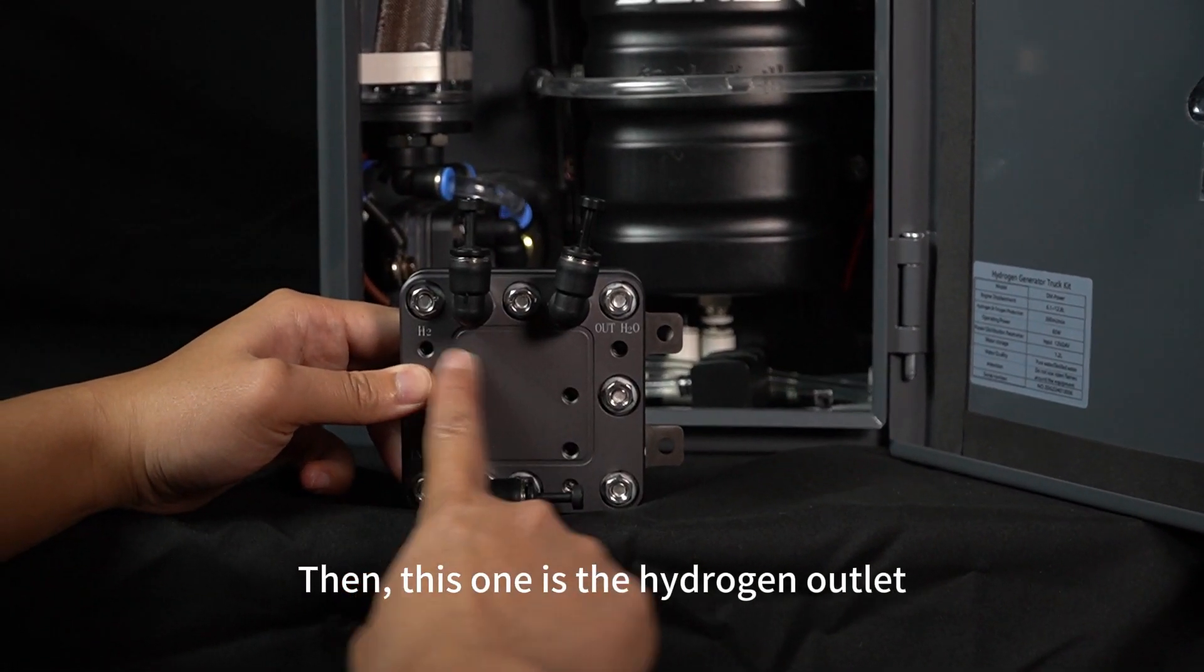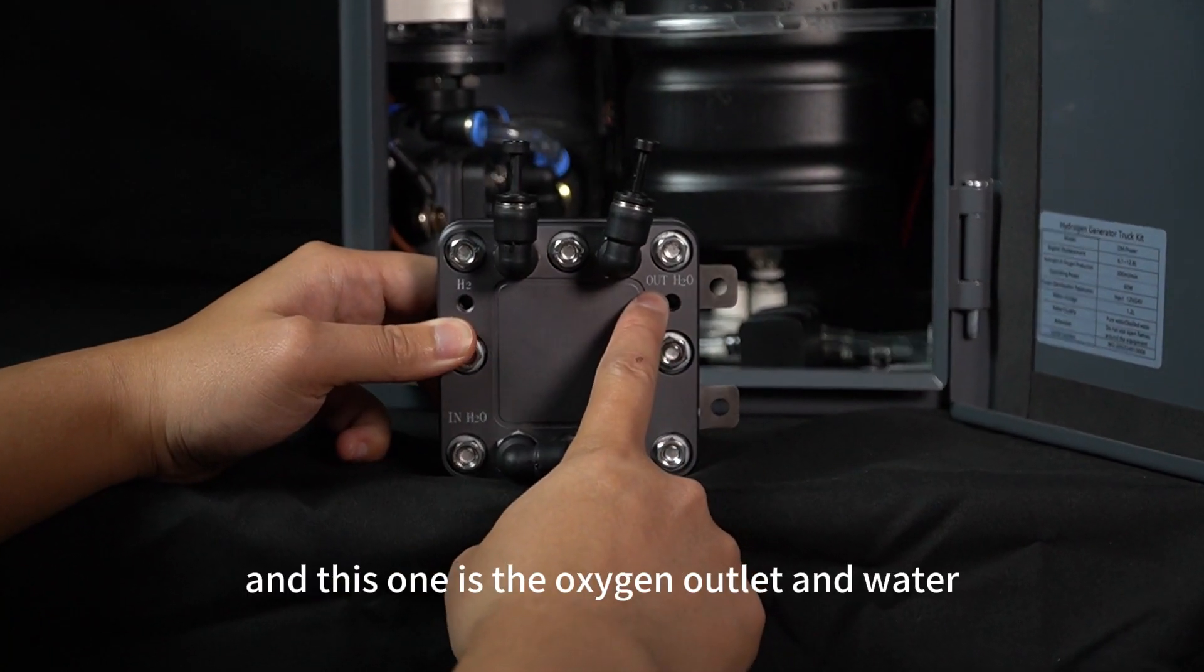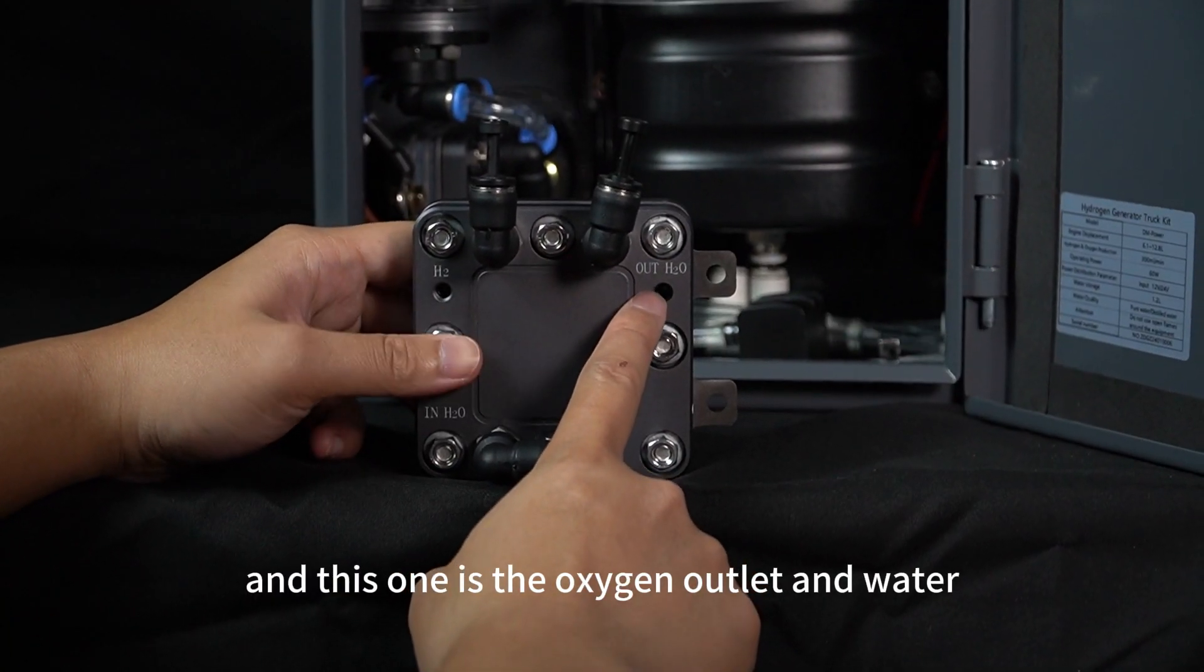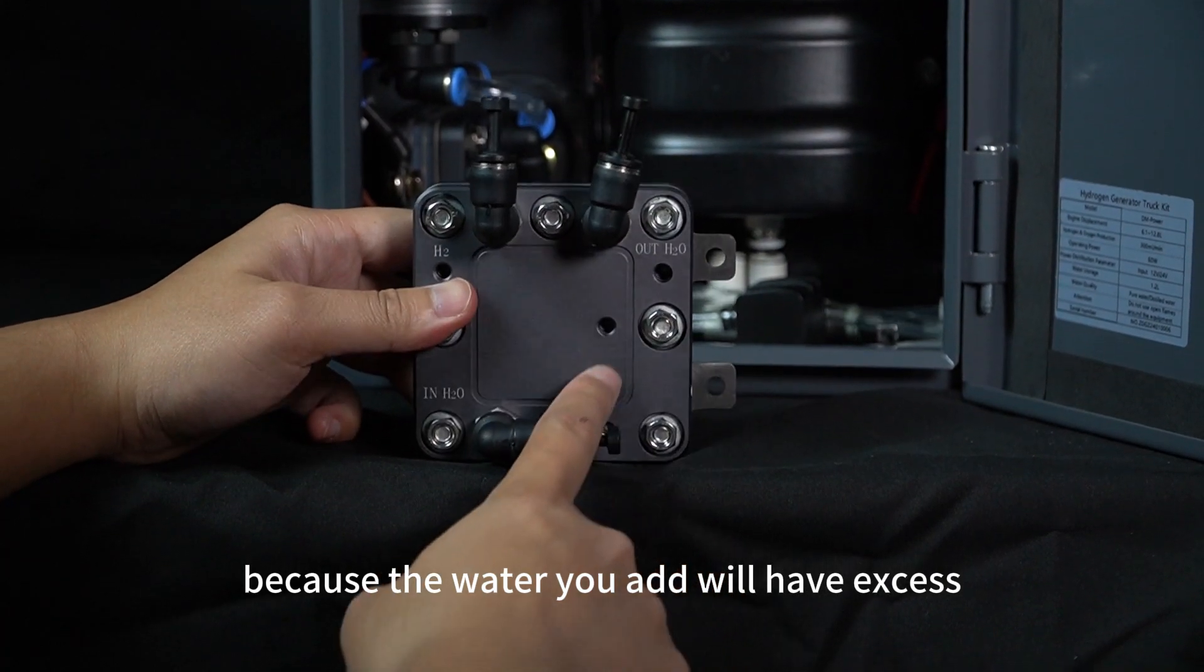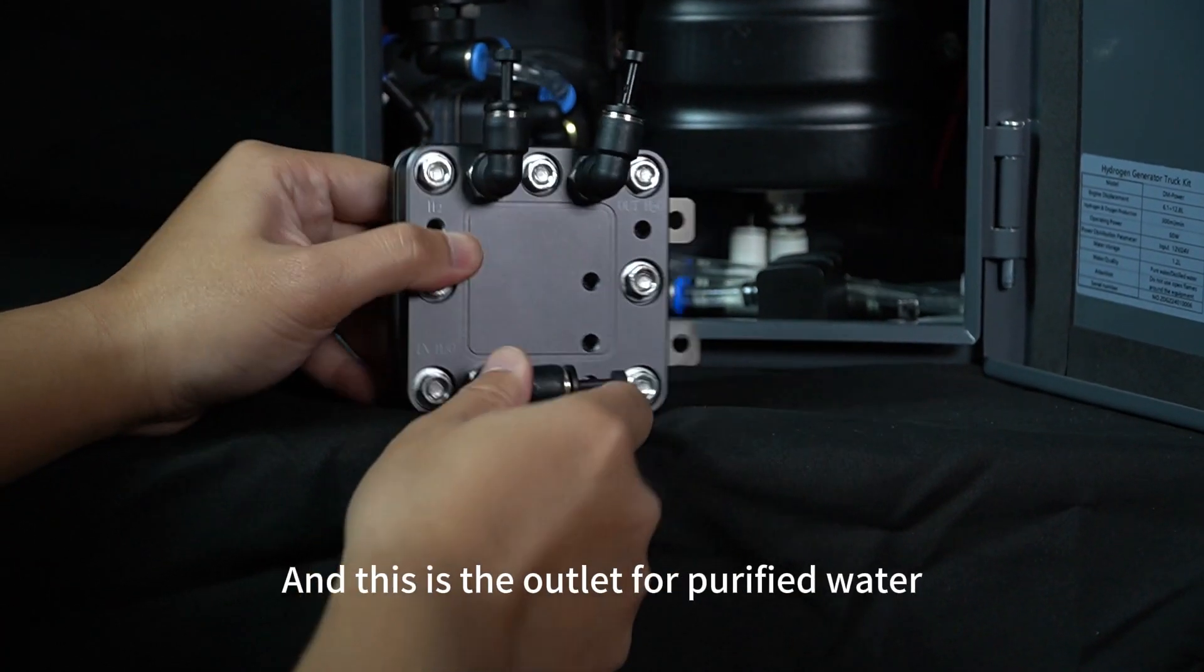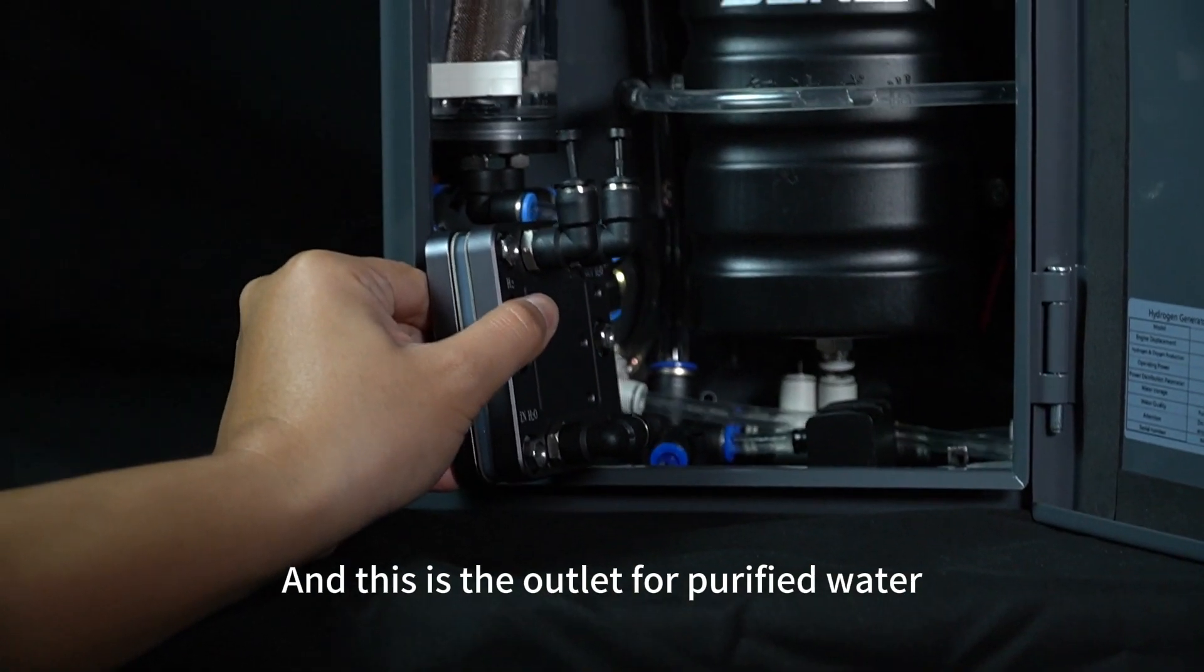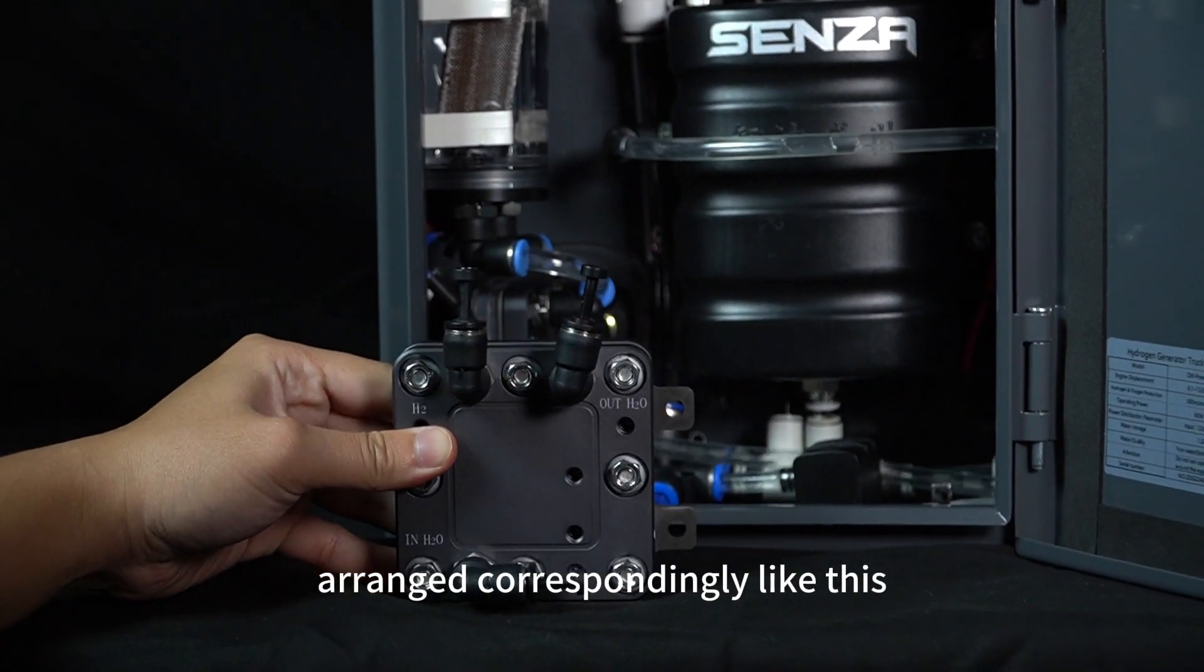This one is the hydrogen outlet, this one is the oxygen outlet, and water. Because the water you add will have excess that will be filtered out, and this is the outlet for purified water, arranged correspondingly like this.